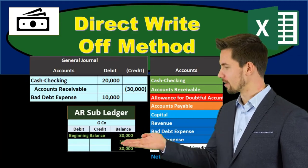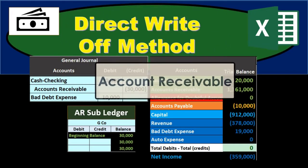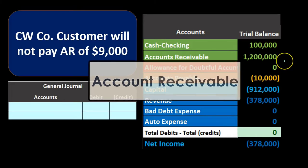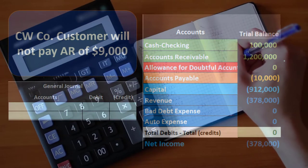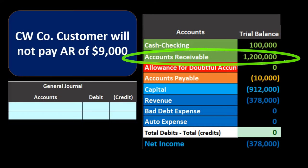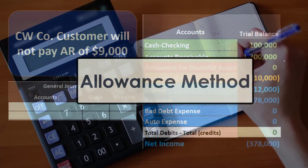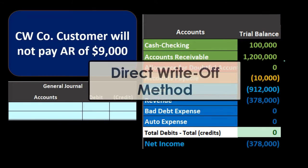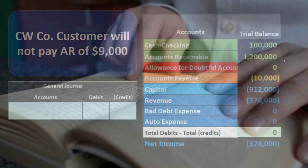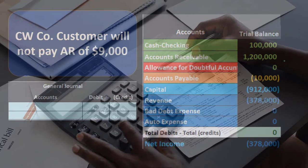In this presentation we will be discussing the direct write-off method as it relates to accounts receivable. Accounts receivable is a current asset with a debit balance. We're going to be writing off certain amounts that will become not collectible at some point in the future. There are two ways to do this: the allowance method and the direct write-off method. The direct write-off method is the non-GAAP method, however it is typically much easier to use.